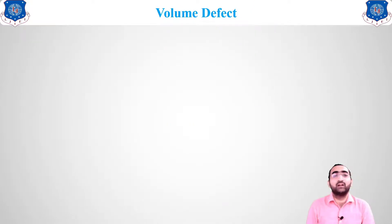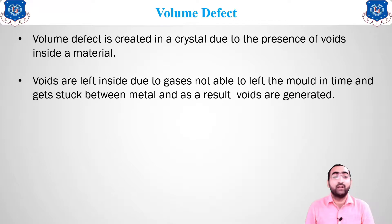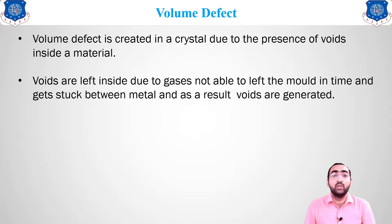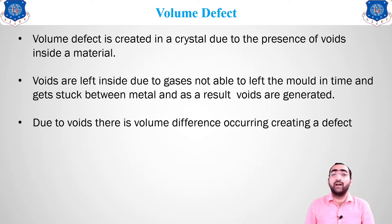The fourth type is the volume defect. It is due to the presence of voids inside the material. During solidification, if there is any gas inside the material, it creates voids — this is a volume defect. The gases that do not come out leave voids inside, changing the volume of the crystal and creating a defect. Foreign particles, porosity, holes, and blowholes are all responsible for volume defects — any change in the volume of the crystal falls under this category.